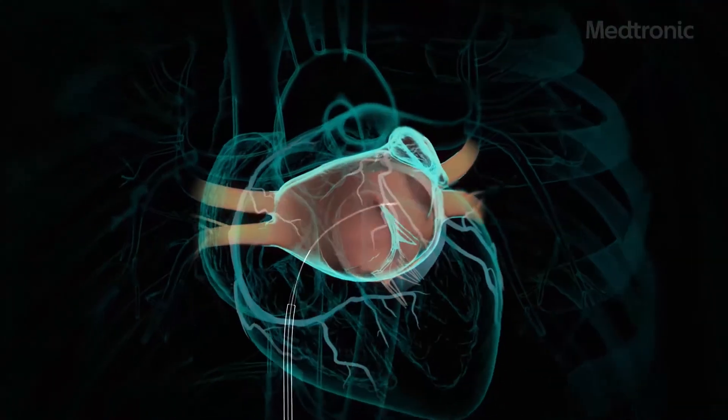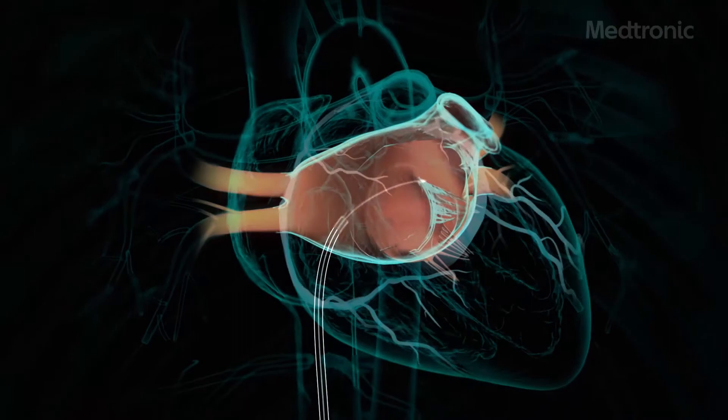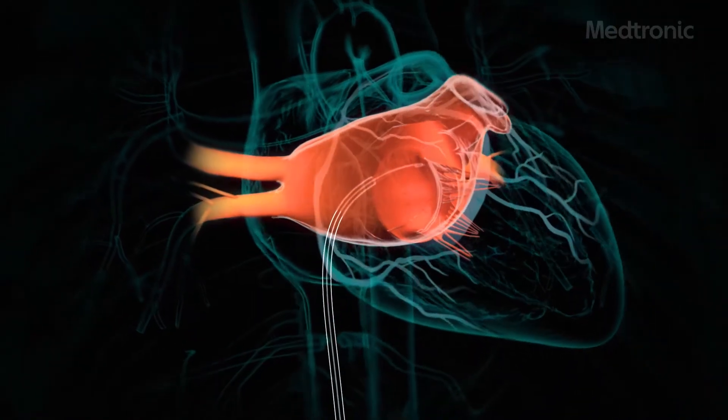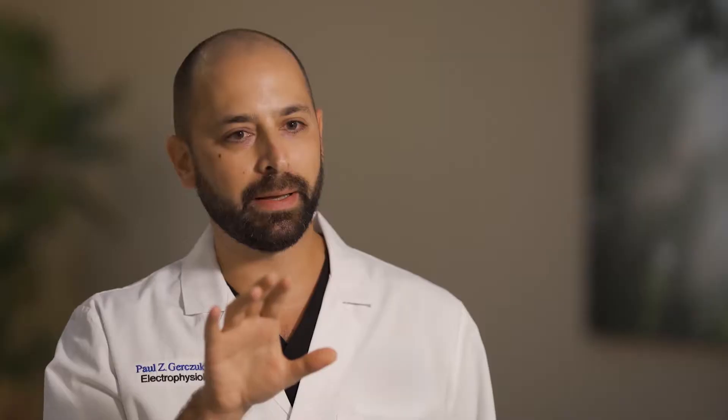It's all done through catheters that go up through the vessels in the groin, up into the heart, and we ablate that tissue either by heat energy, which is called radiofrequency ablation, or we use cold energy, which is called cryoablation.